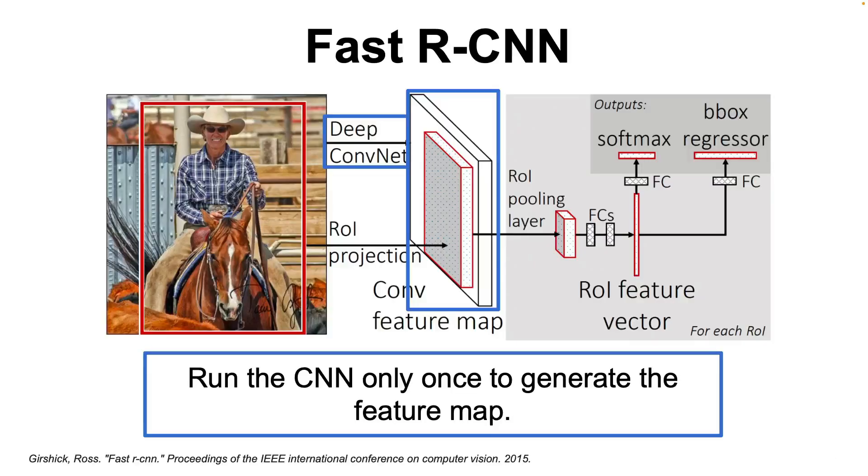What Fast R-CNN does instead is use the CNN model to process the entire image instead of processing each region separately. This is done by taking the entire image as input to the CNN and passing it through a series of convolutional and pooling layers, obtaining a feature map.